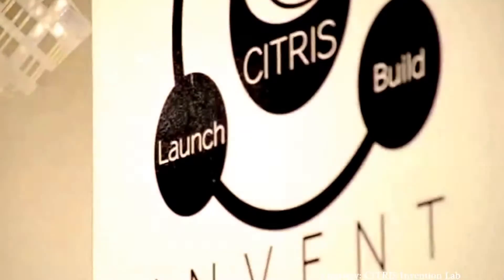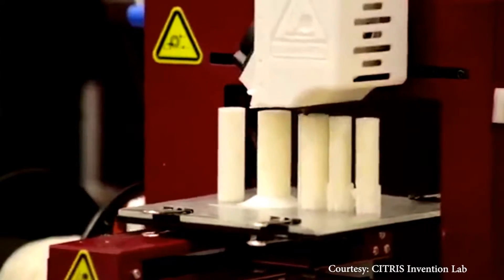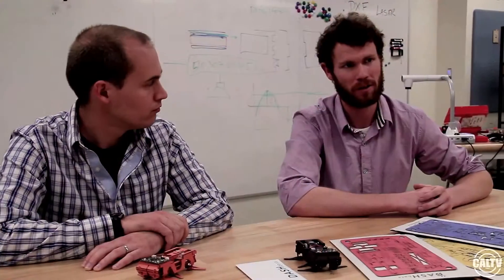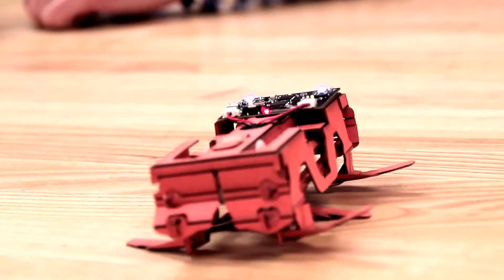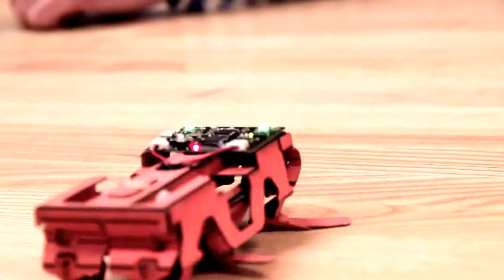Dash Robotics is an example of how innovation meets success here in Silicon Valley. If you're working on something and you think you can form a company about it, the resources now exist in Berkeley for you to be able to realize that.